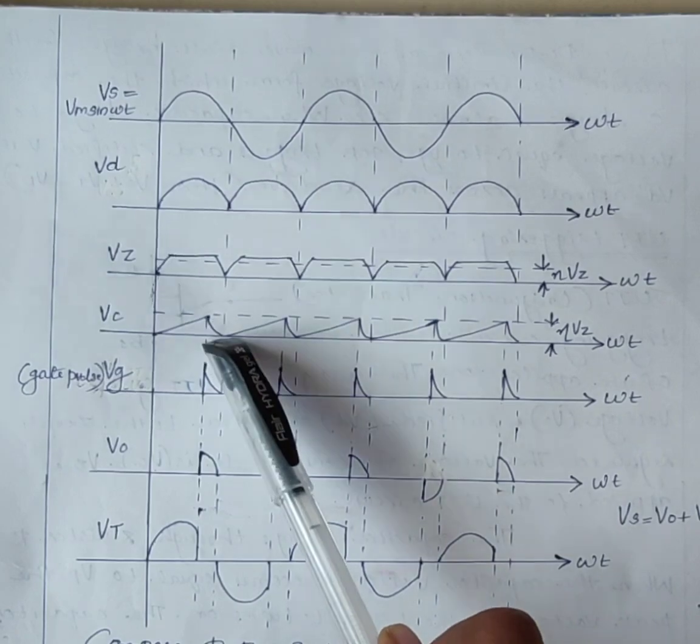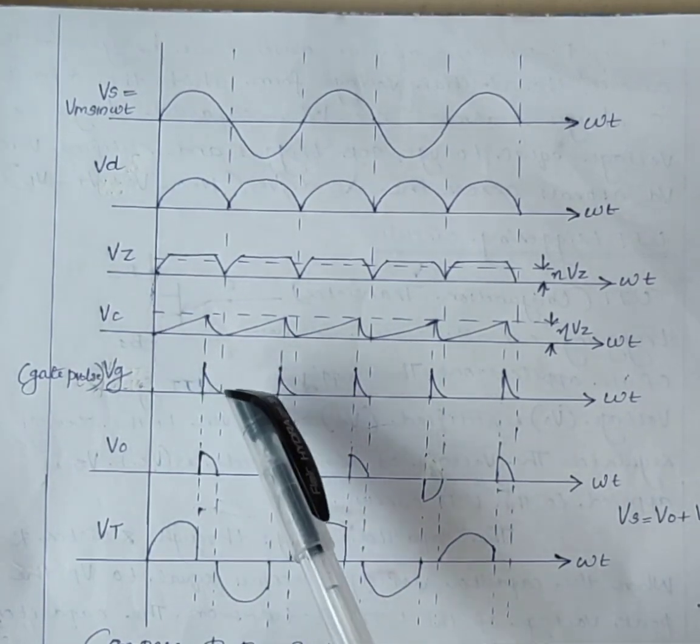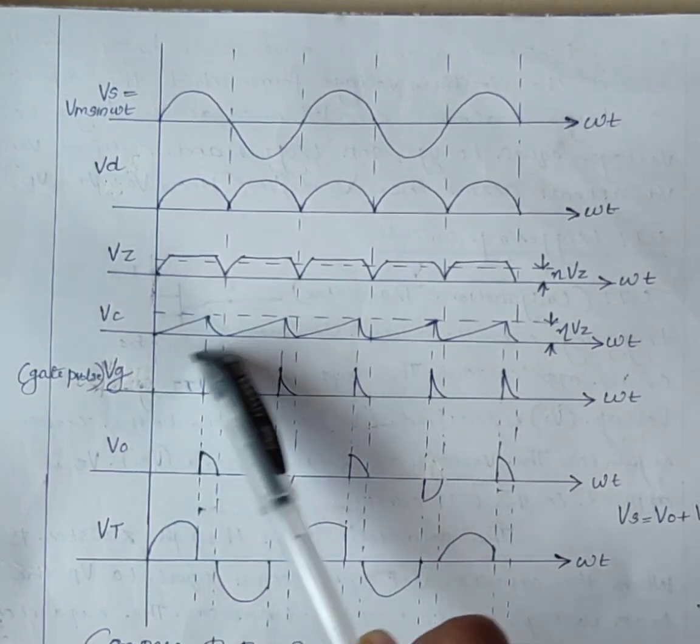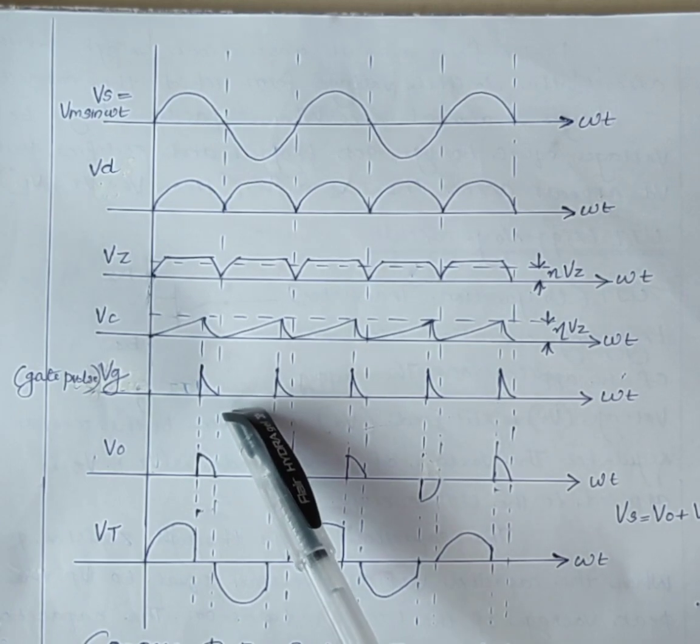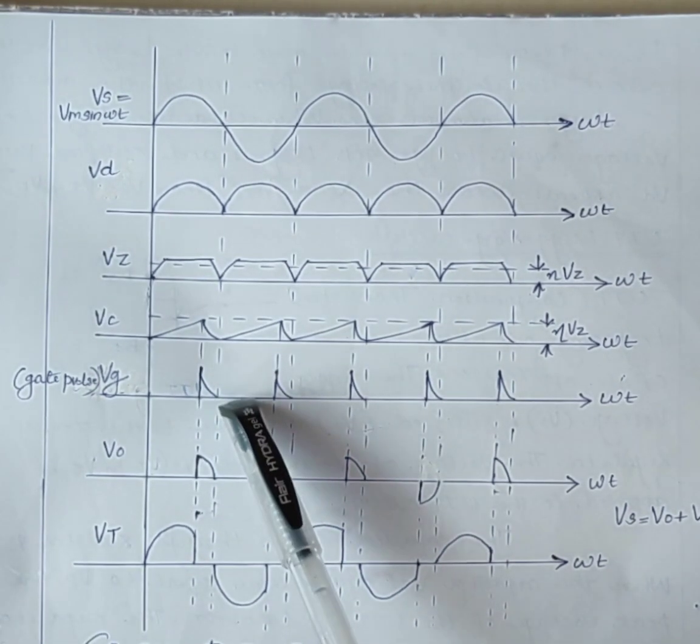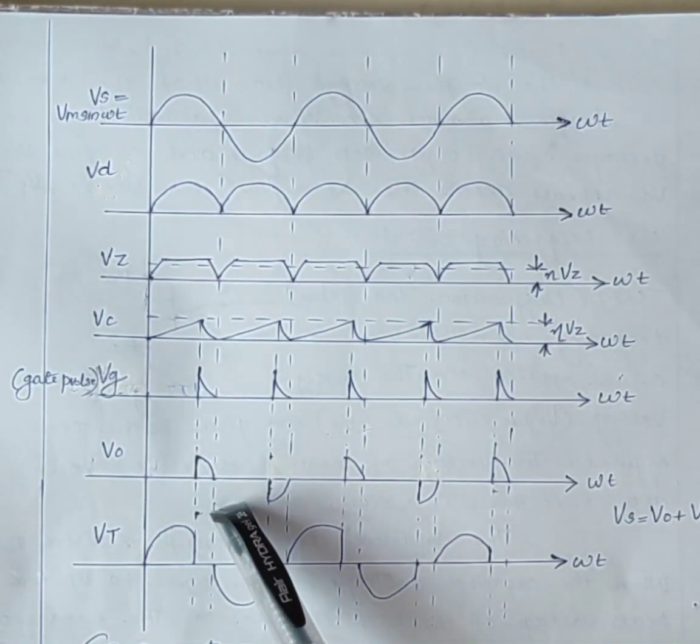Therefore, a pulse is produced at the primary as well as secondary of the pulse transformer. This pulse acts as gate trigger pulse of SCR. Therefore, SCR is turned on and the supply voltage appears across the output.